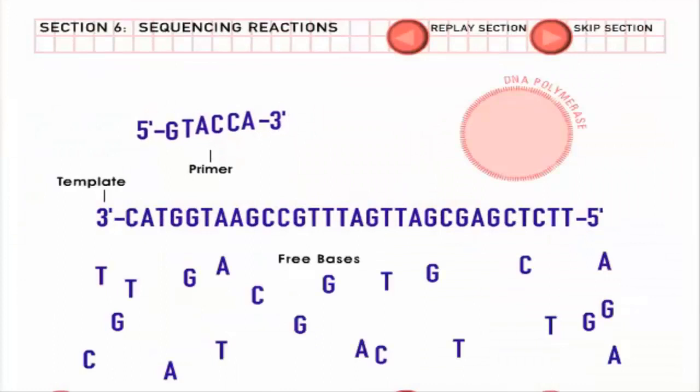A sequencing reaction includes four main ingredients. Template DNA, copied by the bacteria. Free bases, the building blocks of DNA that come in four types. Short pieces of DNA, called primers. And DNA polymerase, the enzyme that copies DNA.